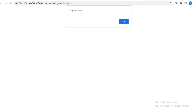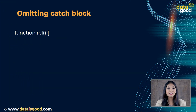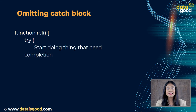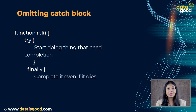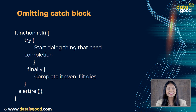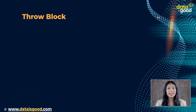Sometimes we need completion even after there is an error — like taking measurements. In that situation we can omit the catch block: function rel — try: start doing the thing that needs completion; finally: complete it even if it dies. The code is going to be completed successfully.